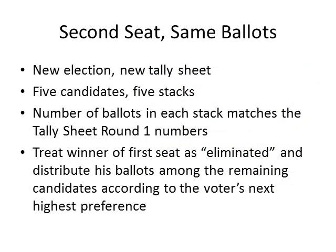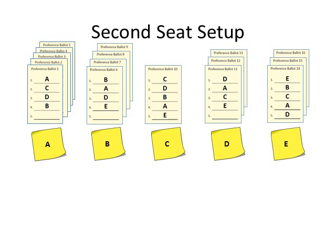Filling the second seat is a new election with a new tally sheet. Again, there are five candidates, so there will be five stacks of ballots initially, one stack per candidate. The ballots are sorted into stacks according to the highest preference on the ballot and placed above the sticky notes. You will notice that the number of ballots in each stack matches the number of ballots cast in round one of the race for the first seat.